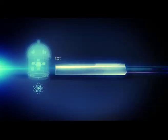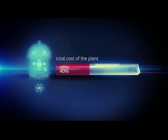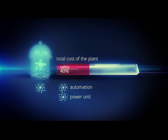At Russian nuclear power plants, costs of safety systems amount to 40% of the total cost of the plant. A sizable share is spent for automation, power unit design, and safety systems.